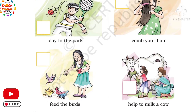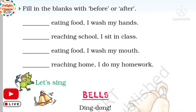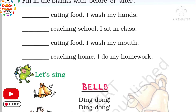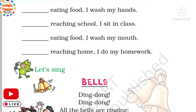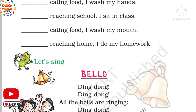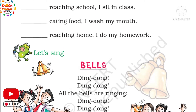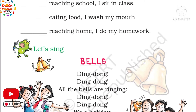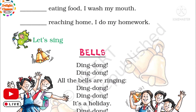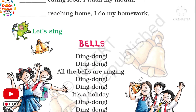Page number 15 of your literature book, Merry Gold. Fill in the blanks with 'before' or 'after'. Before eating food, I wash my hands. After reaching school, I sit in class — fill karenge blank mein 'after'. After eating food, I wash my mouth. After reaching home, I do my homework.